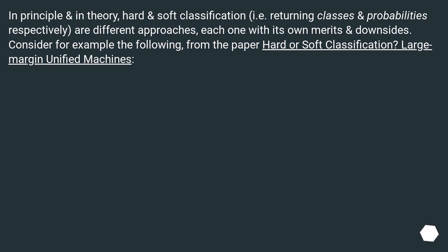In principle and in theory, hard and soft classification — i.e. returning classes and probabilities respectively — are different approaches, each one with its own merits and downsides. Consider for example the following, from the paper 'Hard or Soft Classification? Large Margin Unified Machines.'